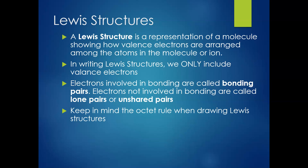You want to keep in mind the octet rule when drawing Lewis structures. Everyone on the periodic table wants to have eight valence electrons, except hydrogen and helium, which are only looking to have two — so they essentially follow the duet rule.